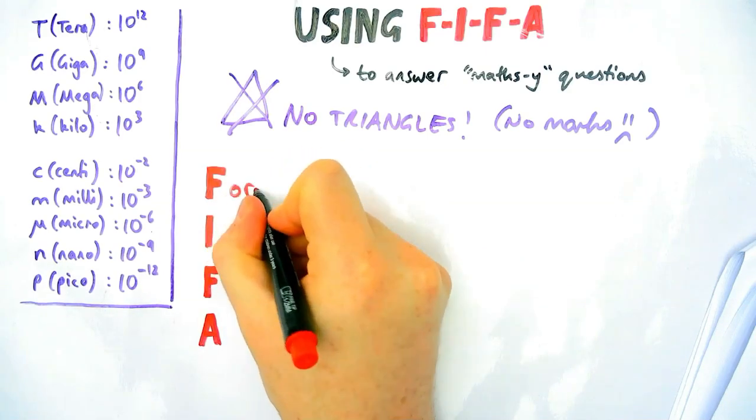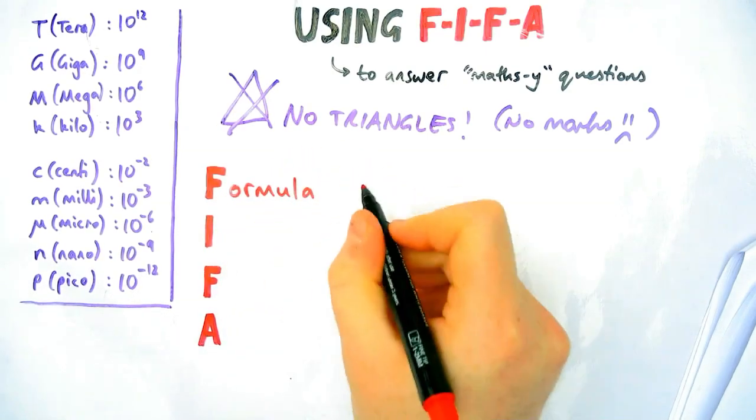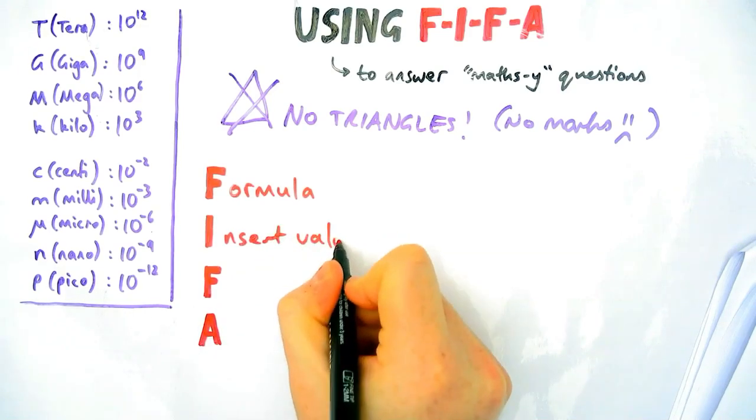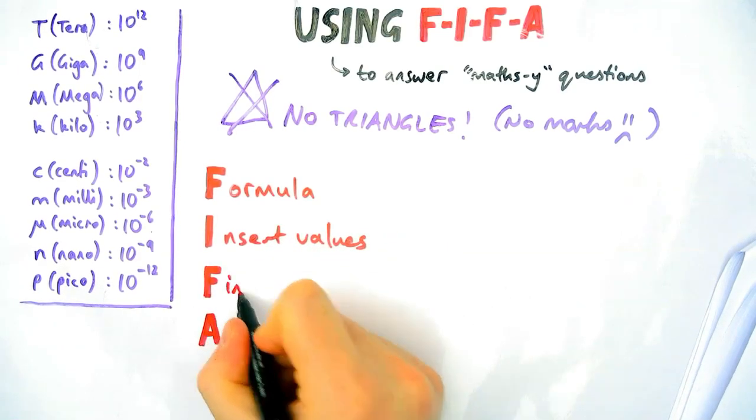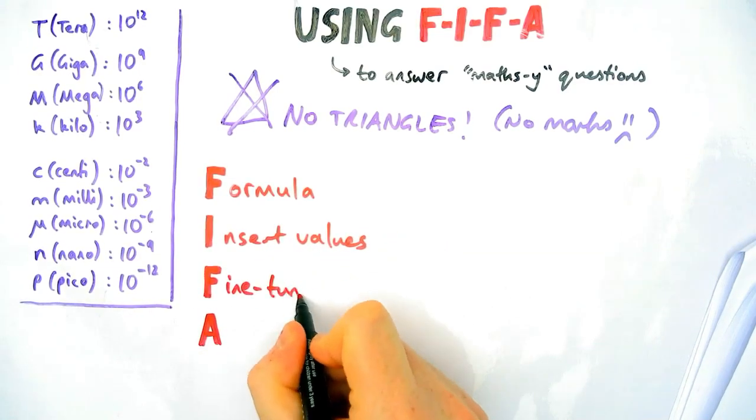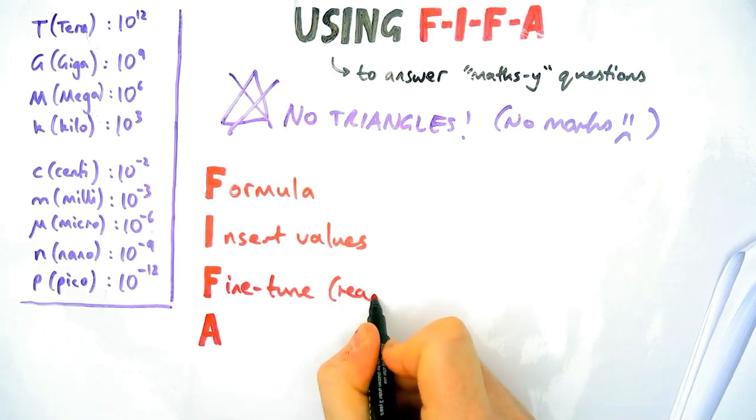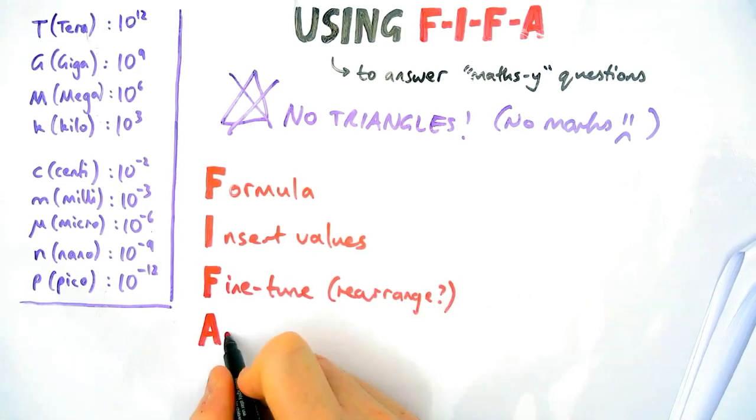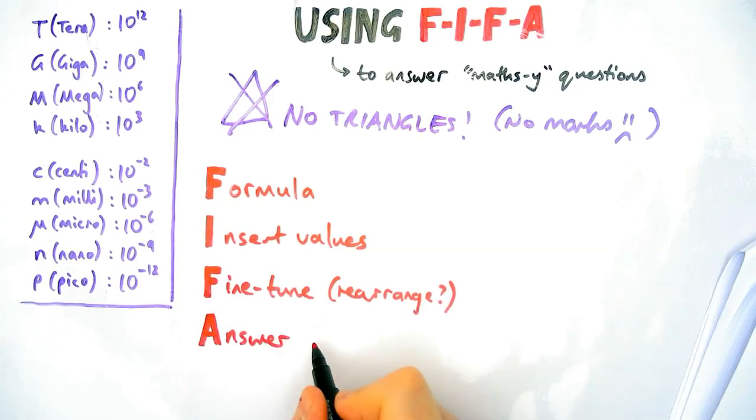The F stands for formula or equation. Find it on the equation sheet—that's the easy bit. Second part is I for insert values, so you put your numbers in first. Then you do any fine tuning, that means rearranging or making any calculations to make your life easier. And then A is obviously for answer with a unit at the end.